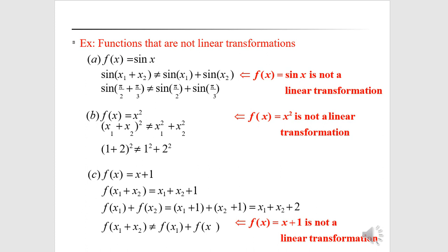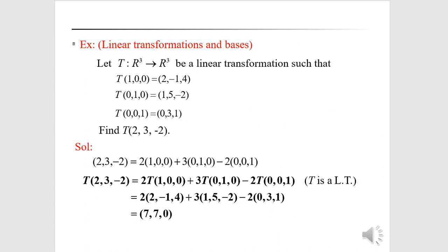Now we see functions that are not linear transformations. For example, f(x) = x². We check: (x₁ + x₂)² ≠ x₁² + x₂². Taking x₁ = 1 and x₂ = 2: (1 + 2)² = 9, but 1² + 2² = 5. Since 9 ≠ 5, this is not a linear transformation.